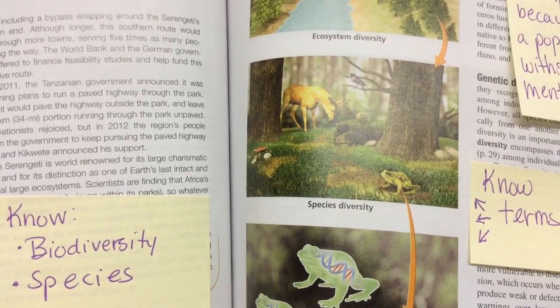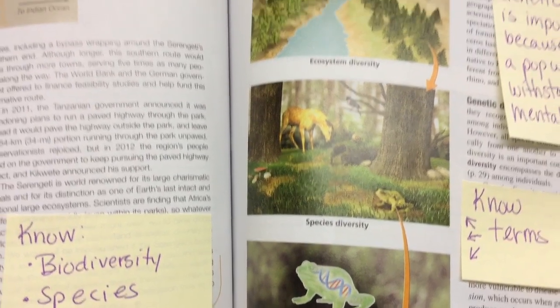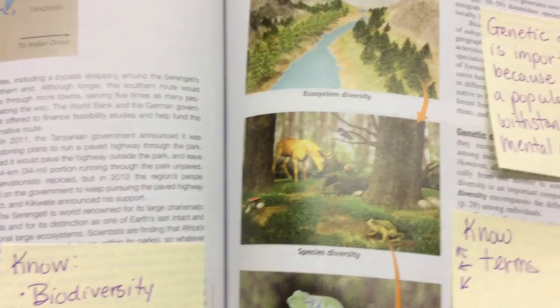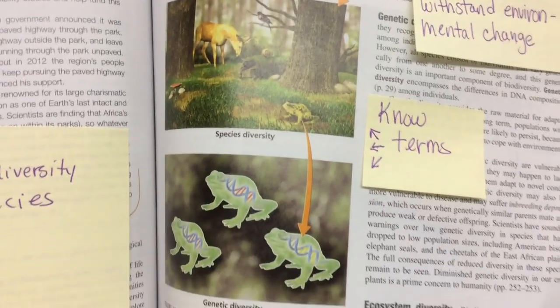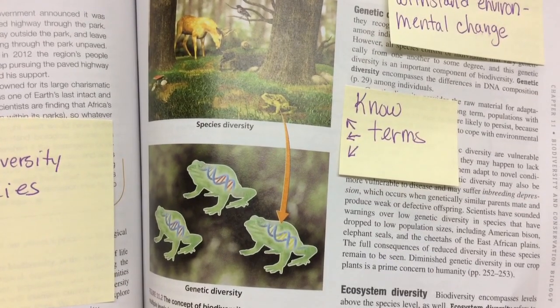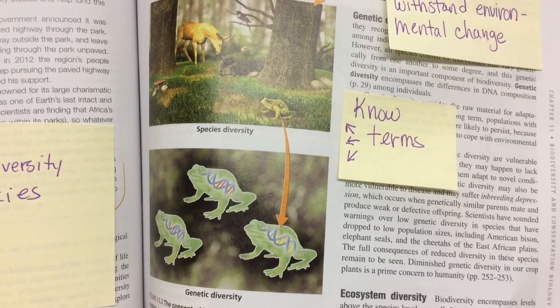There are different kinds of biodiversity. We have ecosystem, species, and genetic diversity. Know all three of those terms.